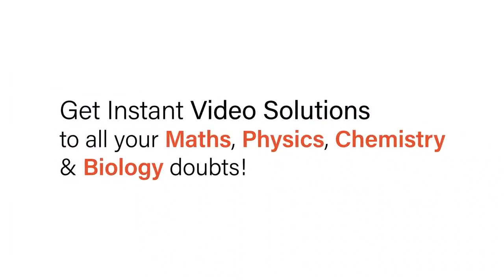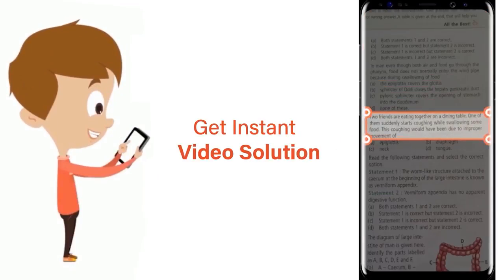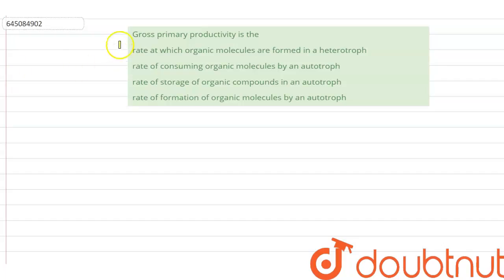With Doubtnut, get instant video solutions to all your maths, physics, chemistry, and biology doubts. Just click the image of the question, crop the question, and get instant video solution. Download Doubtnut app today. Okay, question here says gross primary productivity is which of the following?